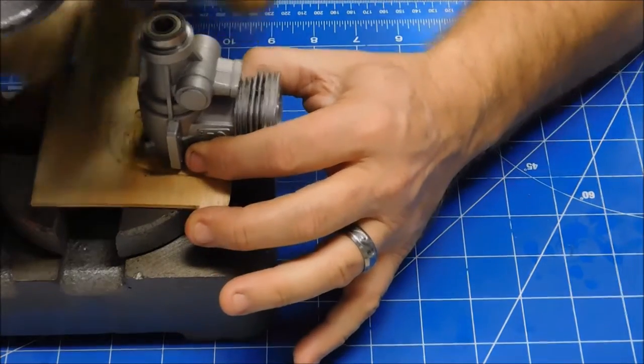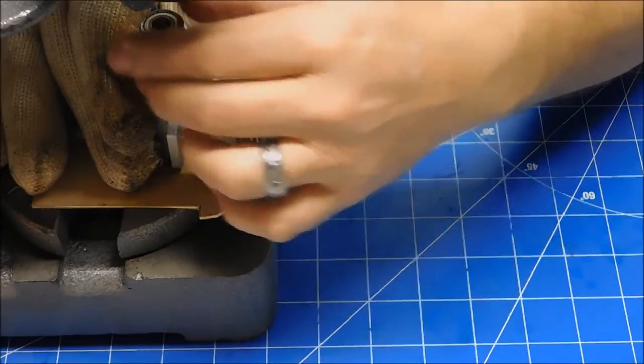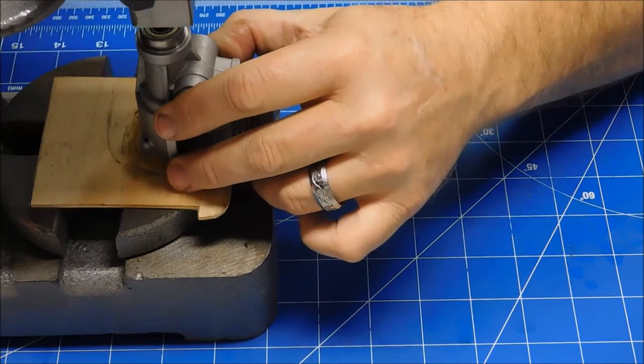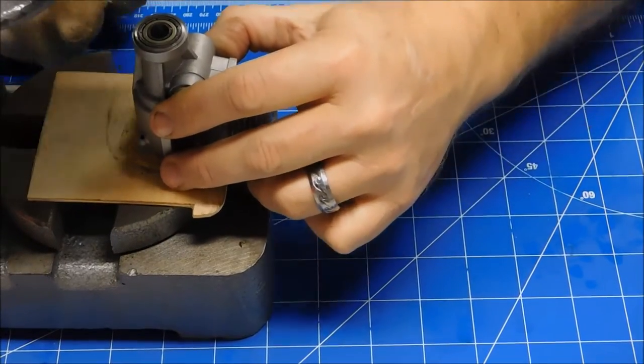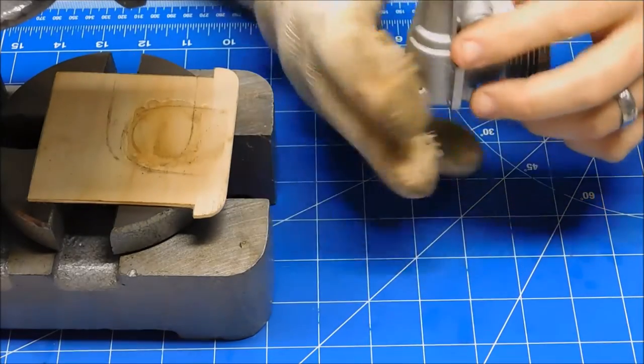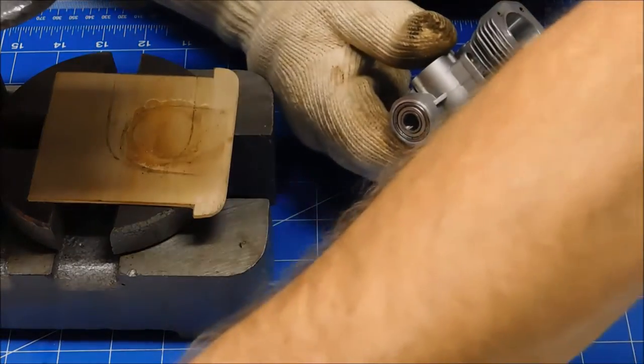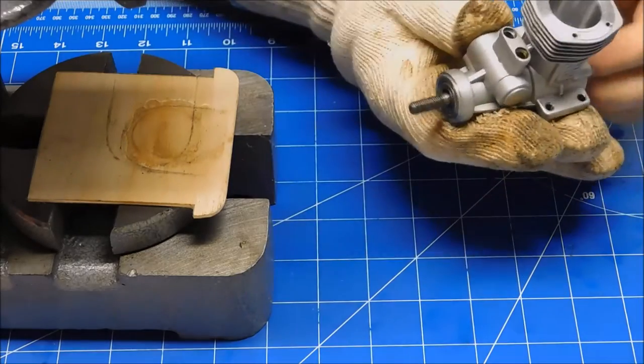I have a piece of wood that I set it on here, just so the crankcase isn't sitting right on top of the steel, and we just press it in place. That's pretty much all there is to the installation of that front bearing.